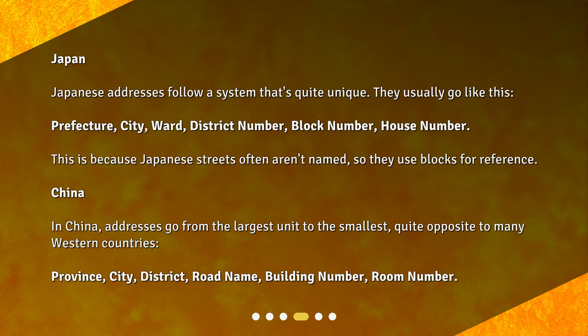China. In China, addresses go from the largest unit to the smallest, quite opposite to many Western countries: province, city, district, road name, building number, room number.